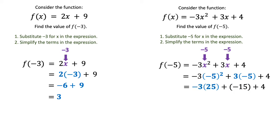The next thing we're going to do is look at that -3 times 25, and that's going to give us -75, plus that -15, and then plus 4.